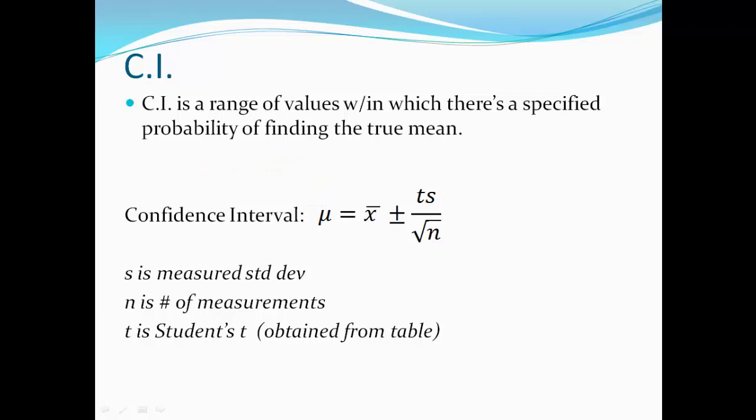T is the student's T, which we're going to talk about in a little bit, and I'm going to show you the table that you need to use when you use this equation. N is the number of measurements, and of course S is your measured standard deviation. The confidence interval is a range. We say that the population mean is likely to lie within a certain distance from the measured mean, that X bar.